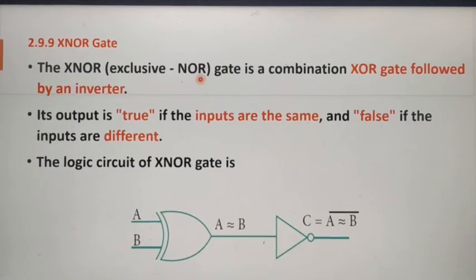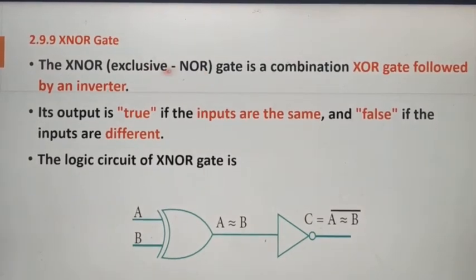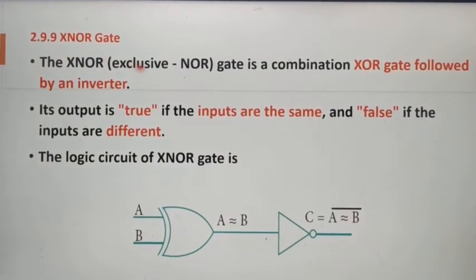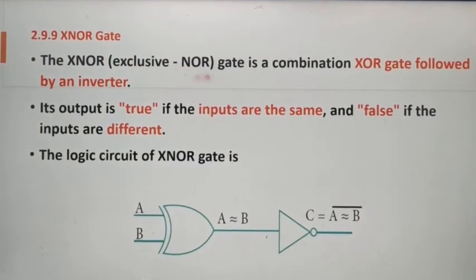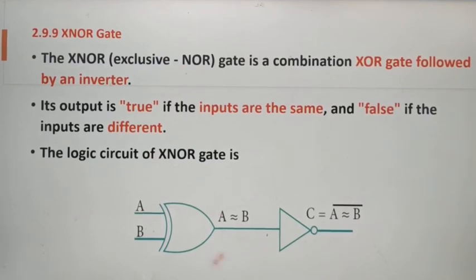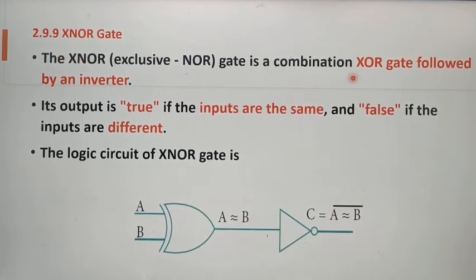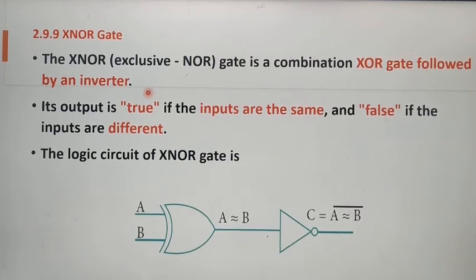Next we can see the logical symbol of the Exclusive OR Gate. The logical symbol of the Exclusive OR Gate is the OR gate symbol with an extra curve. Next, the XNOR Gate is also called the Exclusive NOR Gate. It is the combination of the Exclusive OR gate followed by an inverter.